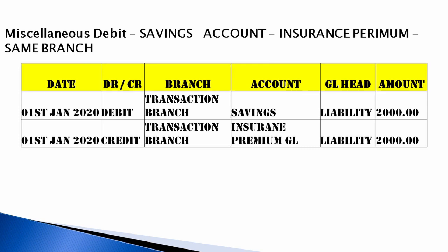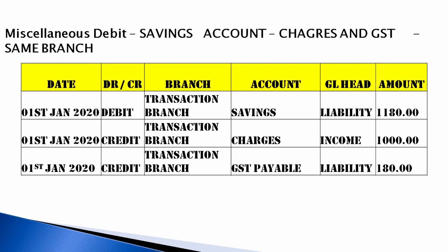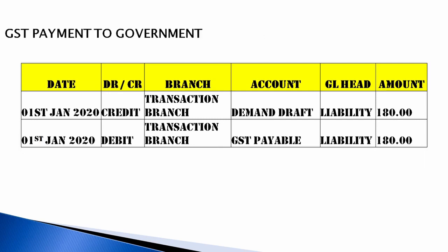For miscellaneous debit from savings account for insurance premium at the same branch, debit the savings account liability and credit the insurance premium GL (a liability); a demand draft will be issued to the service provider such as LIC or Max Life. For miscellaneous debit from savings bank account for a legal fee, savings account (liability) is debited and legal charges income is credited. For miscellaneous debit for charges and GST, the savings bank account is debited for charges plus GST; charges are credited to income and GST is credited to GST payable (a liability), which is transferred to the government every month.